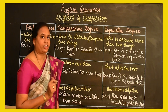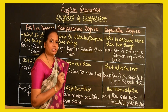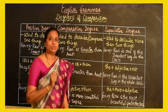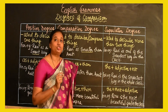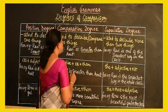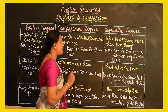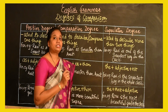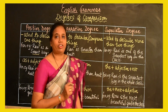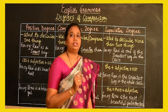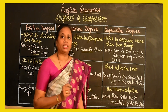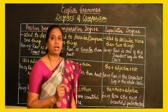In the comparative degree, we see that it is used to describe two things. In the example, we see 'Ravi is smarter than Amit.' That means Ravi is compared with Amit using the word 'smarter.'